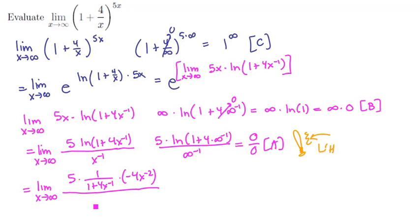The bottom will be the derivative of this, minus 1 times x to the minus 2, and there's our limit according to L'Hopital's rule. Now let's look for some simplifications and cancellations. The x to the minus 2 can be canceled from top and bottom, and the two negatives can become a positive.